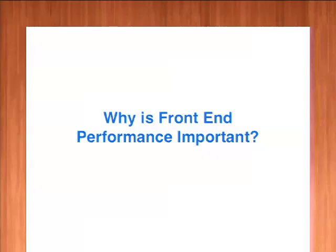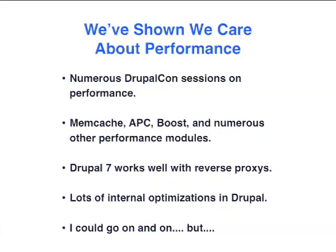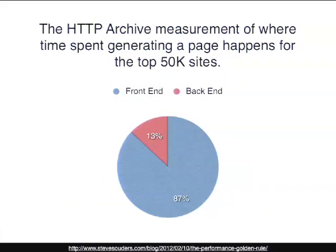I want to talk about why front-end performance is important. It's good to understand the reason and logic before we dive in and do anything technical or alter Drupal core. We've already shown we care about performance — if you go back to old DrupalCons, there are lots of sessions on it: using APC, Memcache, the Boost module for shared hosting, caching. Drupal 7 was made to work well with reverse proxies. We've done lots of internal optimizations, profiling Drupal to find things we can do better.